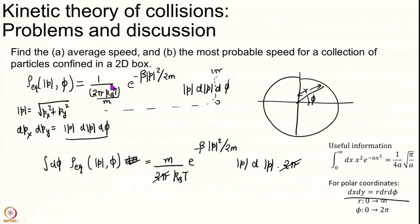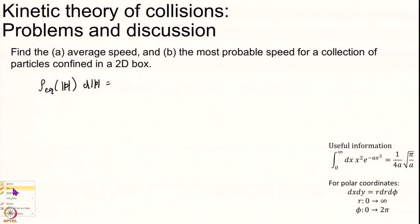I get m over k b t e to the power of minus beta over 2 p over 2 m mod p square mod p. Now we are going to convert to speed. This is momentum.